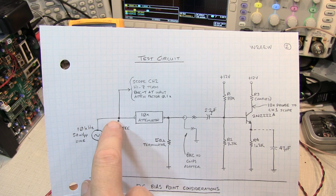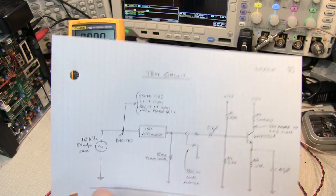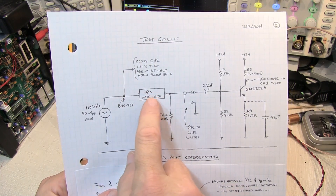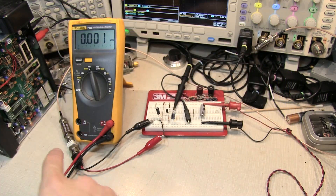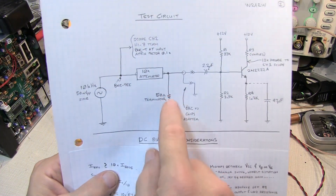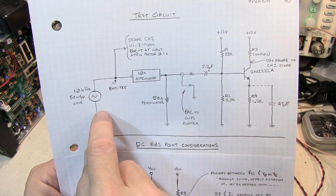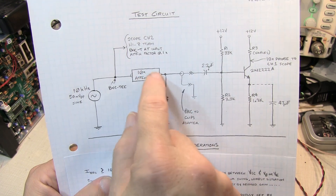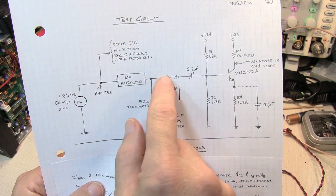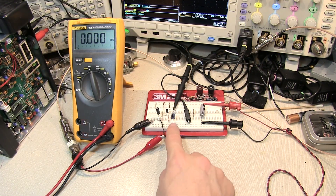To generate the signal for gain calculations I'm using a sine wave function generator running at 50 millivolts peak-to-peak at 10 kilohertz. That runs out to a BNC tee at scope channel 2 with high impedance termination, then into a 10x attenuator — a 20 dB attenuator — followed by a 50 ohm terminator. The 50 ohm terminator properly terminates the line and ensures the 10x attenuator sees the load it's intended to see so it really is a 10x attenuator. Then a BNC-to-alligator-clip adapter brings the signal into the test circuit.